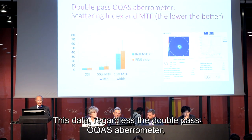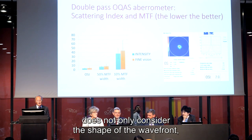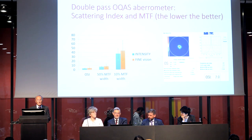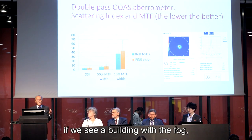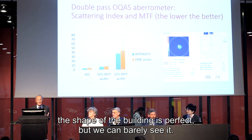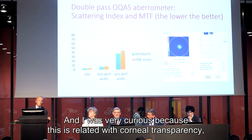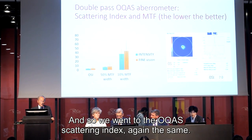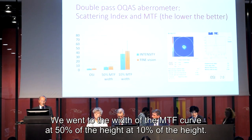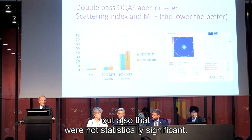This data regards the double-pass OQAS aberrometer. The OQAS aberrometer, as you know, does not only consider the shape of the wavefront but also the intensity of the wavefront. This is to say, if we see a building through fog, the shape of the building is perfect but we can barely see it, and the OQAS will tell us there is fog. I was very curious because this is related to corneal transparency and intraocular lens transparency. We went through the OQAS scattering index — again the same — and the width of the MTF curve at 50% and at 10% of the height, showing slightly better results with the Intensity, but these differences were not statistically significant.